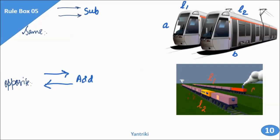Now, similarly here: let the length of the first train be L1 and the second be L2. Let the speed of the first train be 'a' km per hour and the second be 'b' km per hour. If I have to find the relative speed when trains are moving in same direction, I do a minus b; and for opposite direction, I do a plus b.